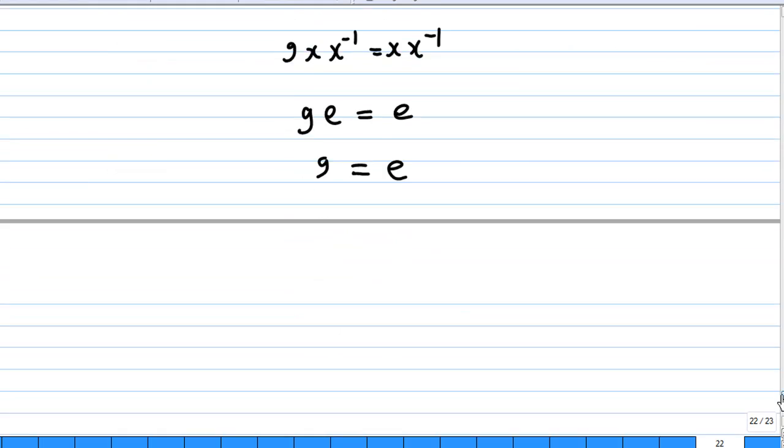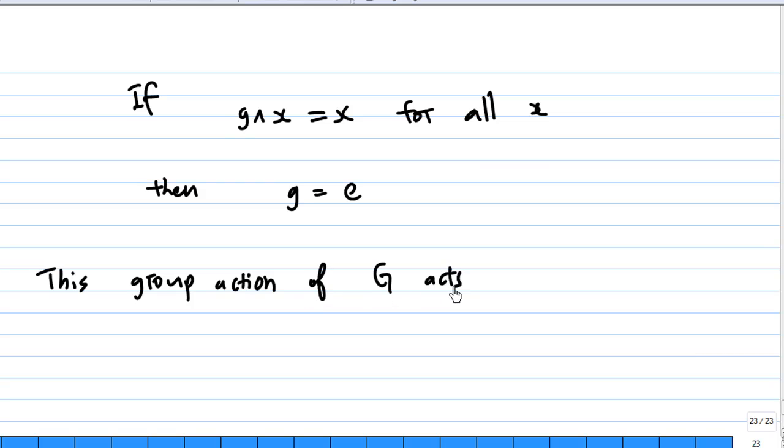So, we conclude, if g^x equals x for all x, then g equals e as I have shown you just now. Therefore, this action, this group action of G acts on G, where g1^g2 is g1 times g2, is a faithful group action.